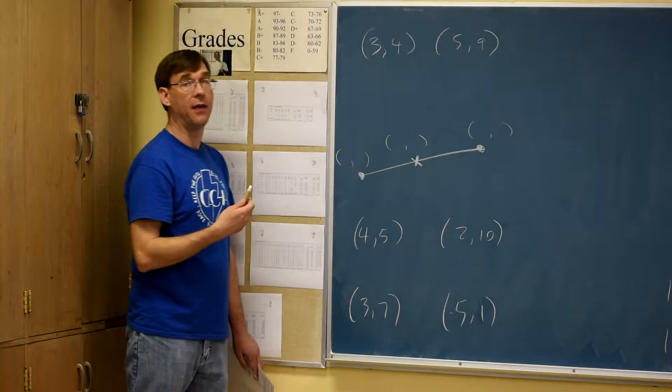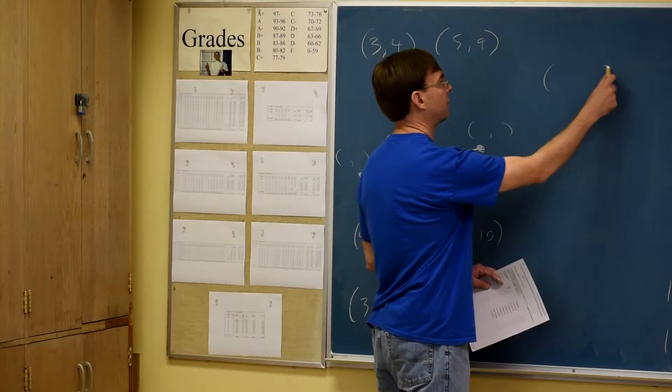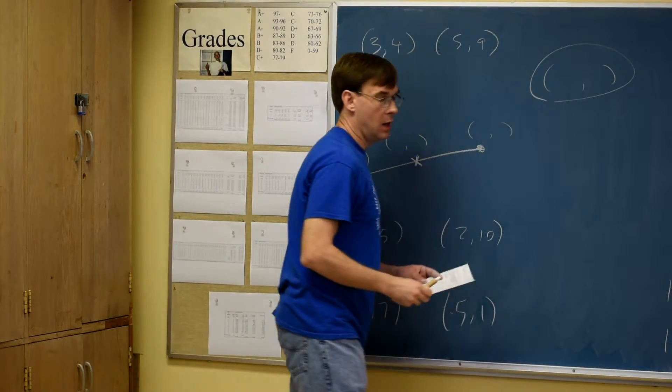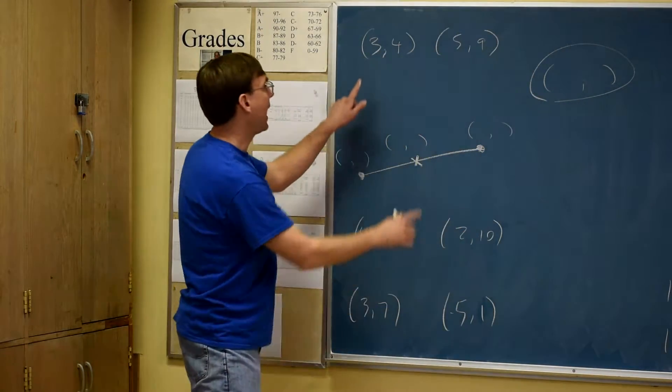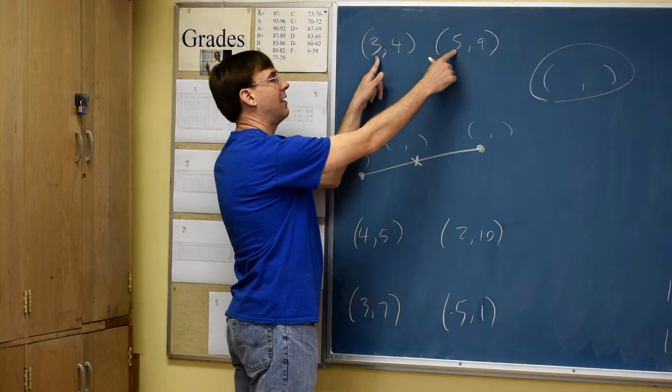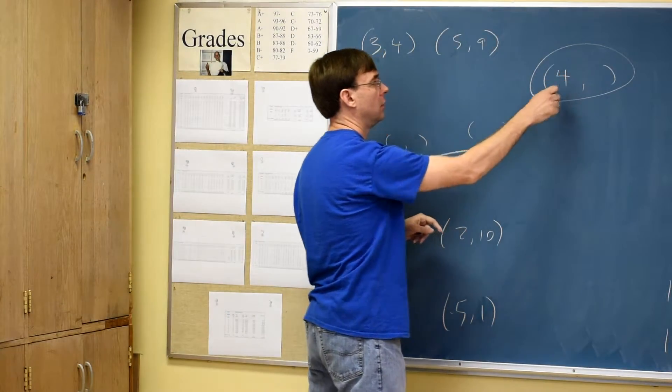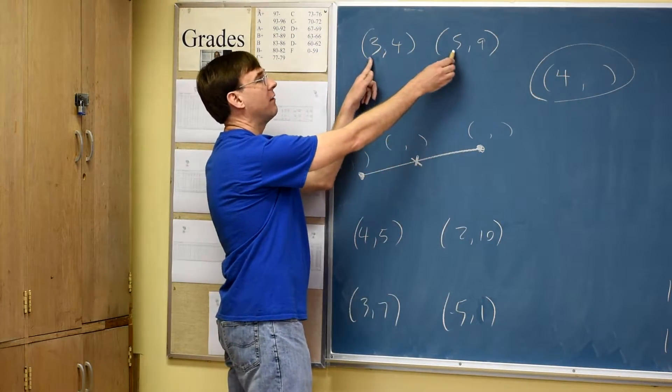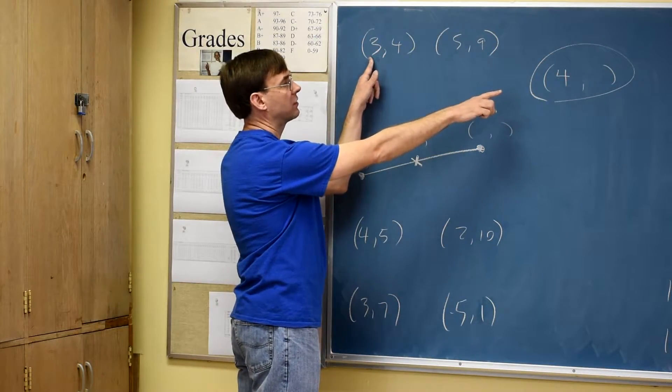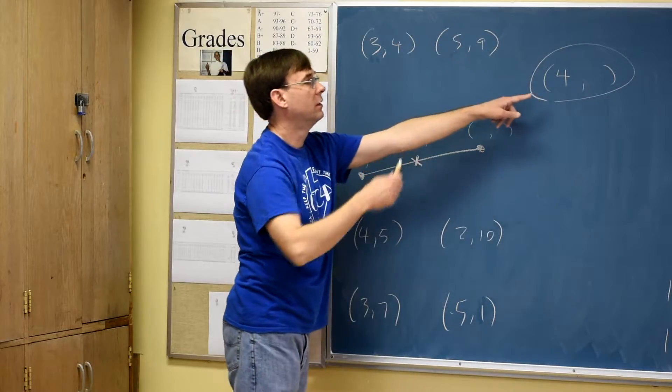By average, I mean add them up and divide by 2. So for this first answer, we want to look at the x's, which is the first numbers. Add these: 3 plus 5 is 8. 8 divided by 2 would get me 4. If I average 3 and 5, that's 4. If we think about the number line, halfway between 3 and 5 is 4.